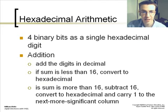In hexadecimal arithmetic devices, 4 binary bits has a single hexadecimal digit. In addition, you add the digits in decimal. If the sum is less than 16, you can convert to hexadecimal. If the sum is more than 16, you subtract 16, convert to hexadecimal, and carry 1 to the next more significant column.